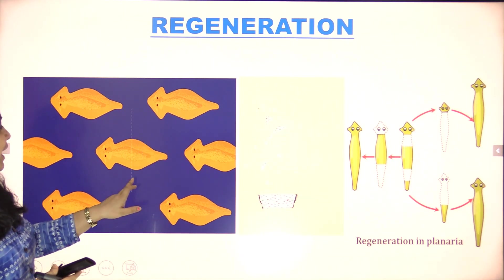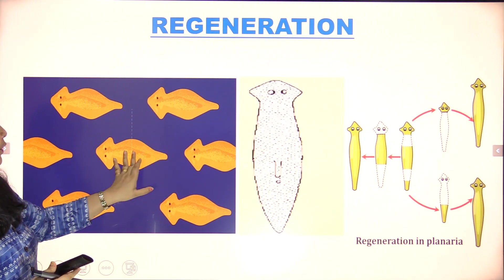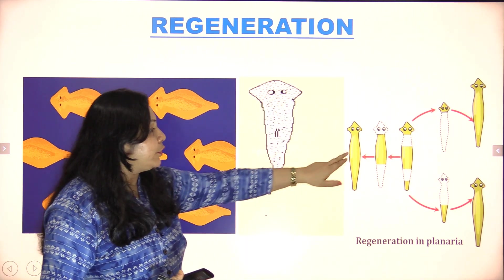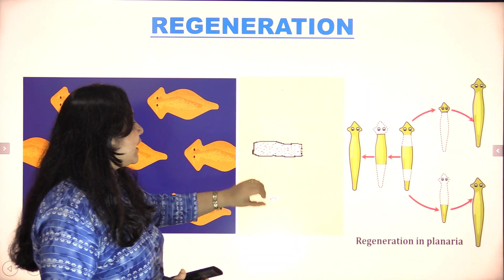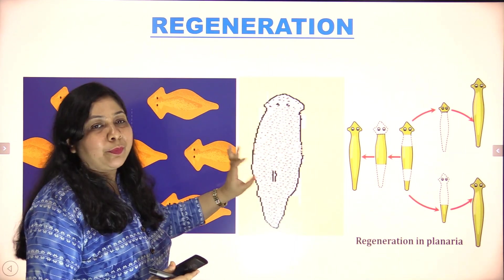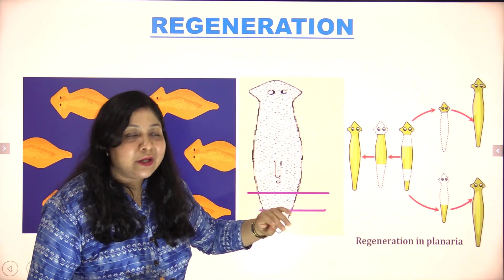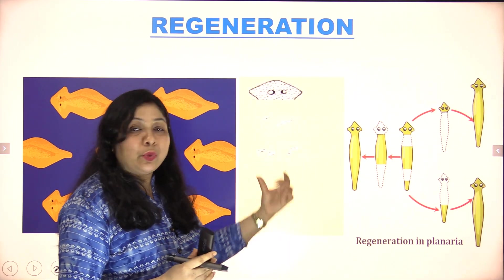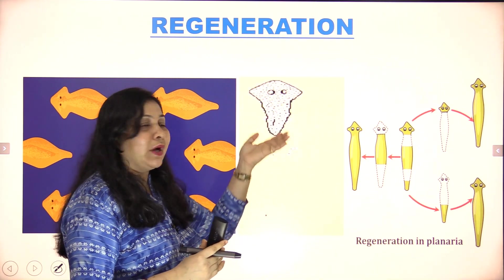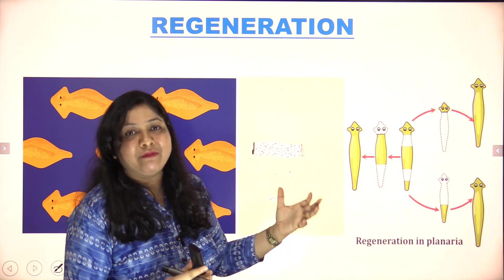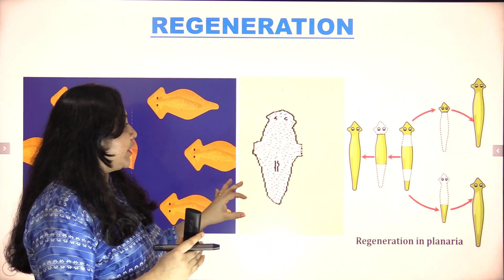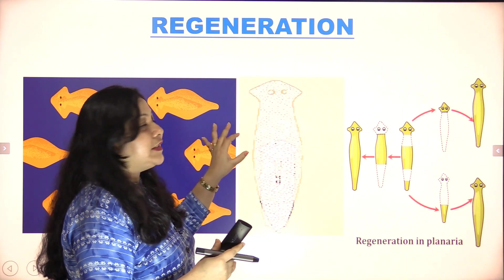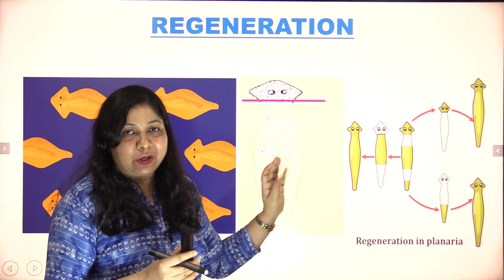In the diagram, if planaria is cut from the middle, both upper and lower parts will develop. If the upper part is cut, the lower and middle parts develop. This regeneration process is amazing and does not happen in our body. This process is called regeneration.